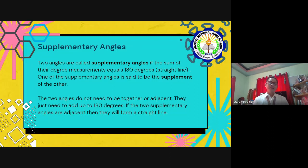And again, the two angles that need to be together or adjacent, they just need to add up to 180 degrees. If the two supplementary angles are adjacent, then they will form a straight line.